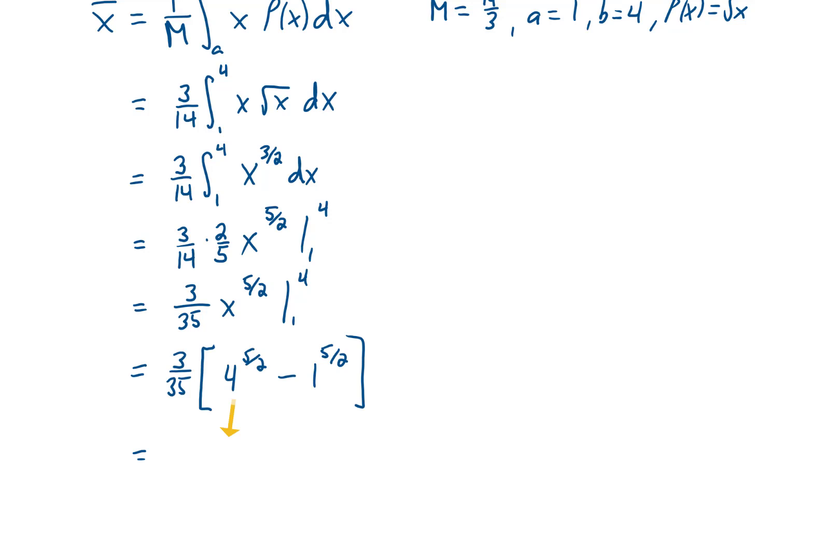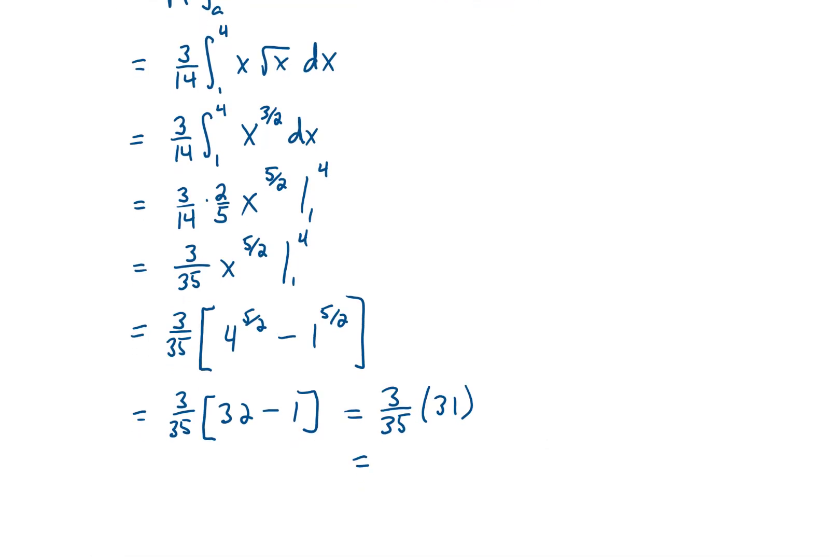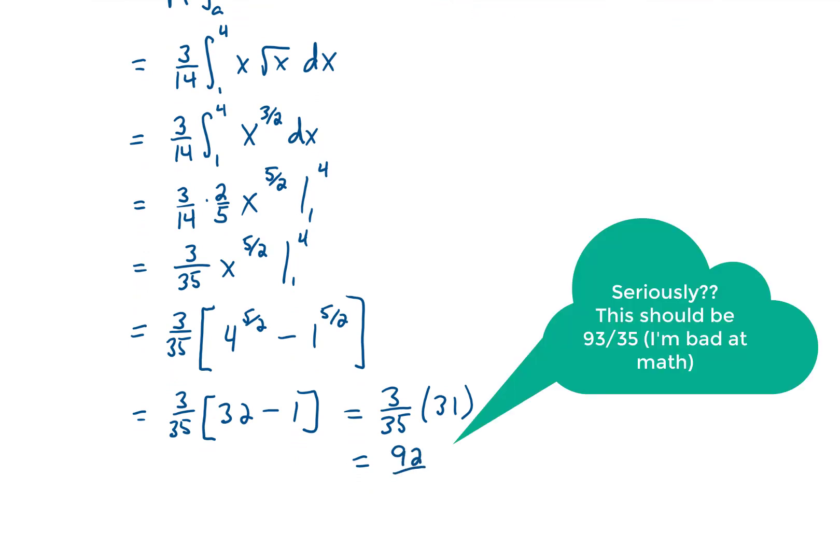4 to the five-halves power is going to be the square root of 4, which is 2, to the fifth power, which is 32. 1 to the five-halves power is just 1, and I don't see much reduction happening with this fraction. I think our answer is just going to be 92 over 35.